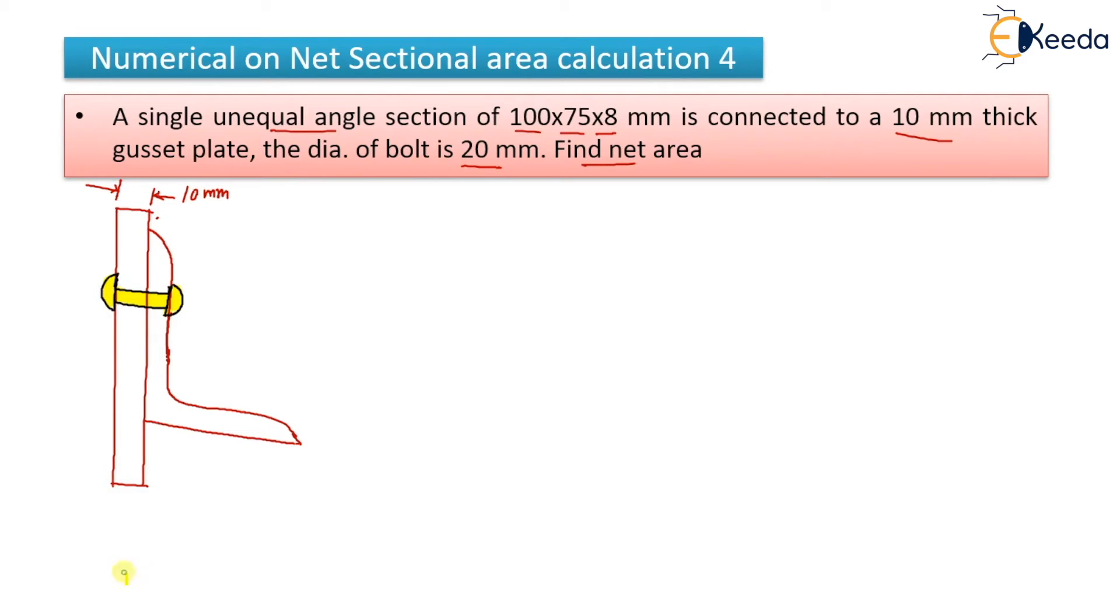Now we will find out the net area. We have written each and everything. Now let us find out the net area. For that I will put the formula here. First of all, let us put the given data here. D is given, it is 20 mm. So we will find out the DH that is 20 plus 2 that will come as 22 mm. And thickness is also given, it is 8 mm. This thickness, it is 8 mm. This value you have to take. And this connected one will be the 100 mm. And the outstanding one, it is 75 mm.